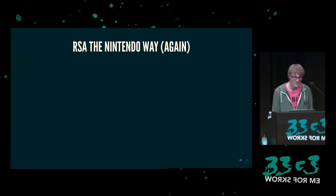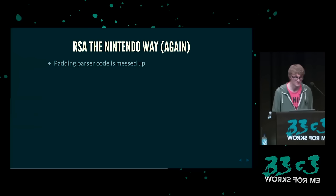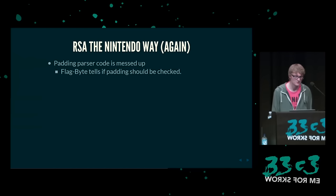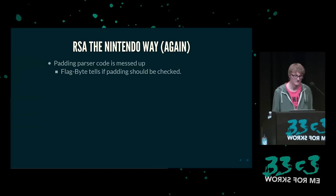Das Erste, was er macht, ist versuchen, das Padding zu lesen — und das ist einfach total kaputt. Da ist ein Flag-Byte drin, der dir sagt, ob das Padding gecheckt werden sollte: wenn es eins ist, wird es gecheckt, aber wenn es zwei ist, überspringt es das einfach. Das ist ein bisschen schwaches Weak-Bounds-Checking. Wenn es durch das Padding durchgeht, stellt es sicher, dass es nicht out-of-bounds geht — aber es schaut nicht richtig nach, ob der Hash auch da rein passt.